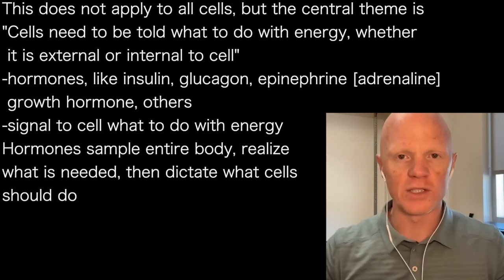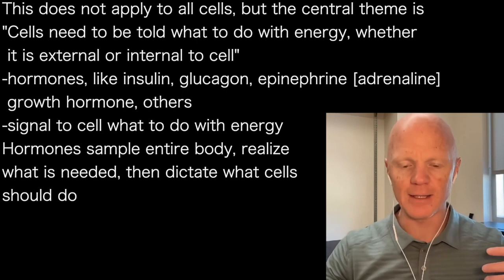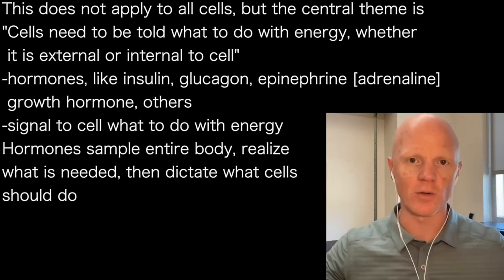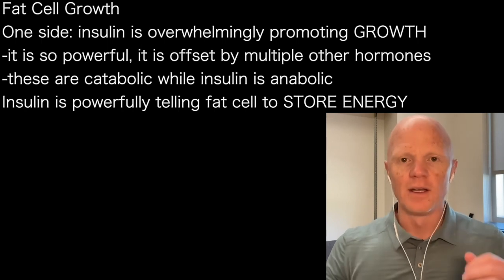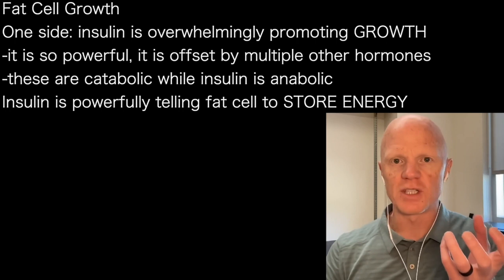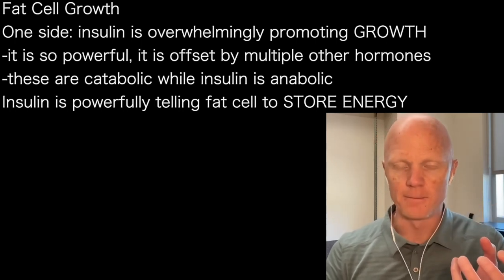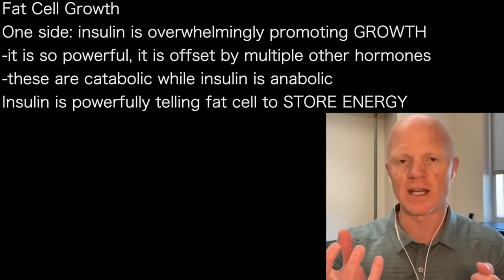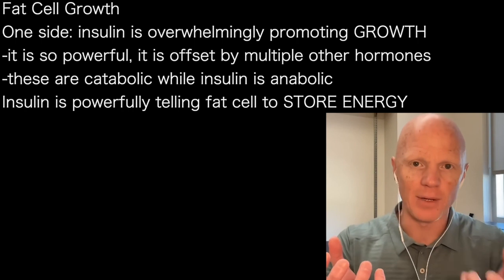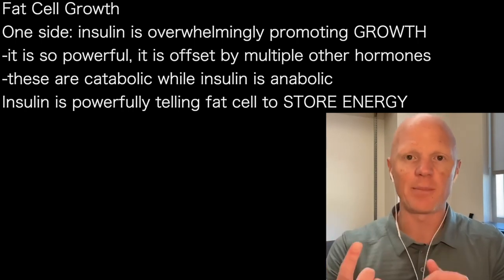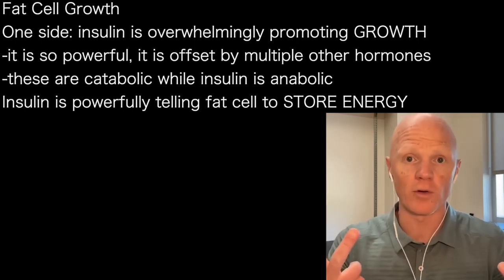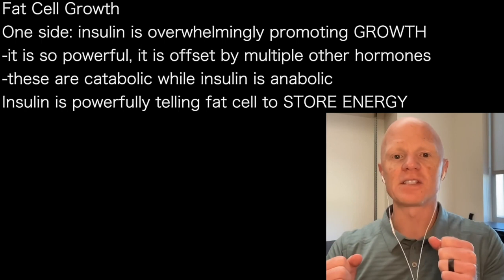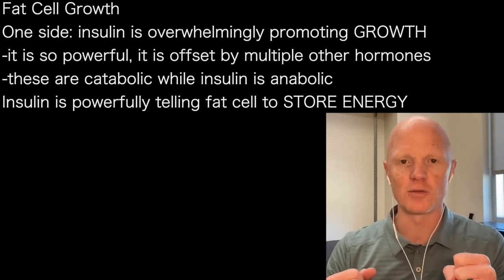The cell doesn't just know what to do with the energy. The hormones are what's sampling the entire body, understanding what's going on, and then dictating to individual cells. It's like the hormones are the conductor of the orchestra. When it comes to fat cell growth, you have insulin overwhelmingly promoting the growth of the fat cell — it is so powerful that it is offset by multiple other hormones with catabolic effects, like glucagon, epinephrine, and growth hormone — all trying to get the fat cell to shrink and share its energy, to offset the incredible power of insulin telling the fat cell to store energy.